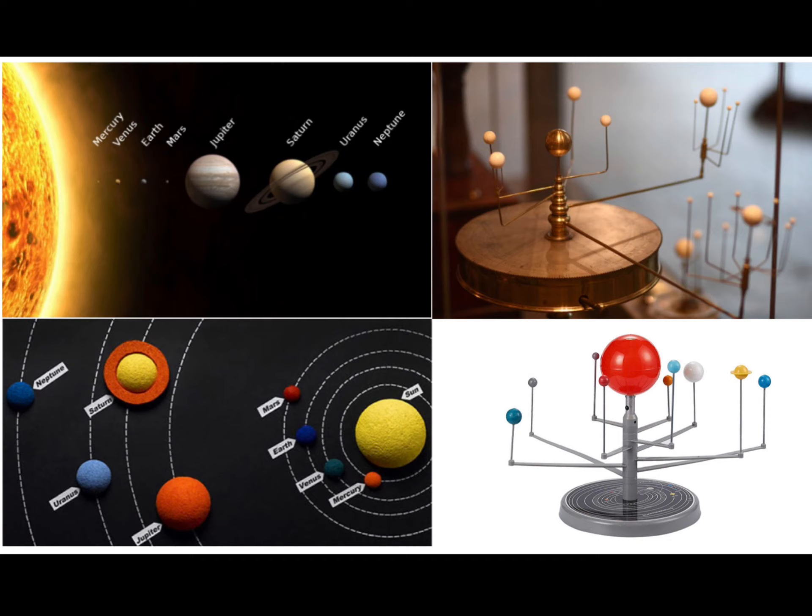Now, which model might be best for a classroom where students are trying to learn the names of the planets, along with the order of the planets, and see the size comparisons between the planets? Hopefully you're thinking this one, even though it doesn't properly show the distances between the planets.